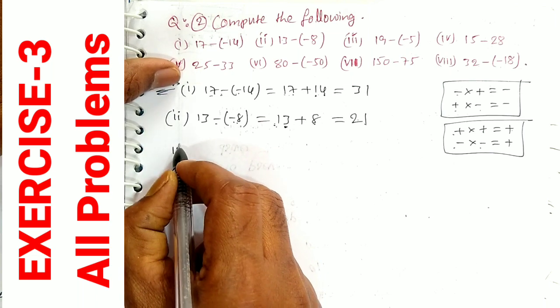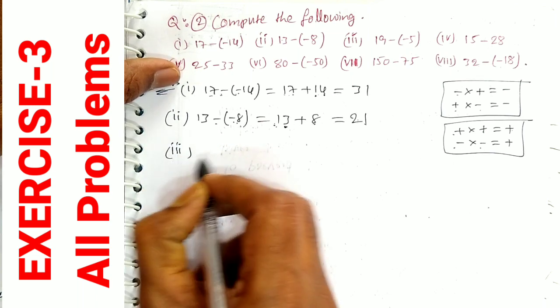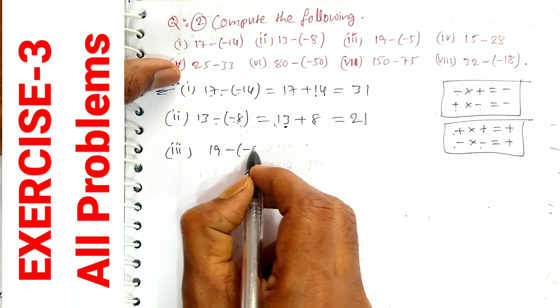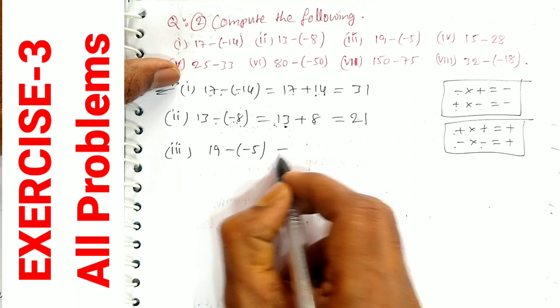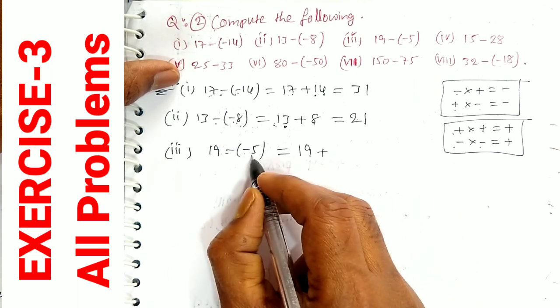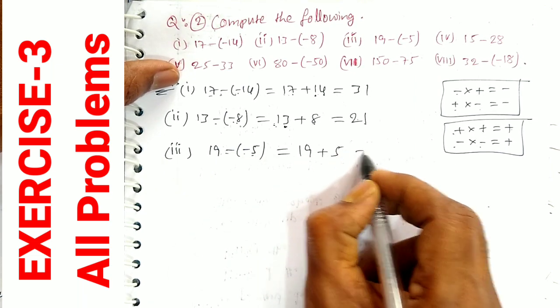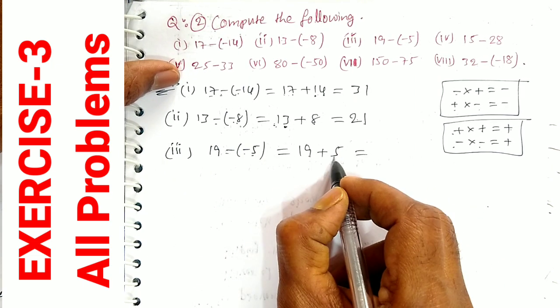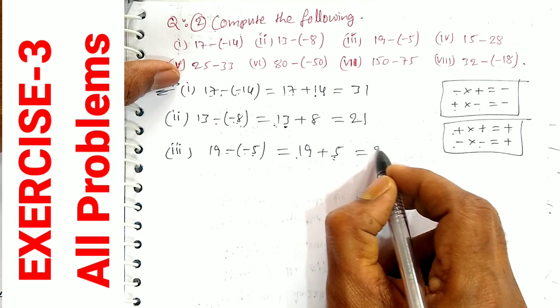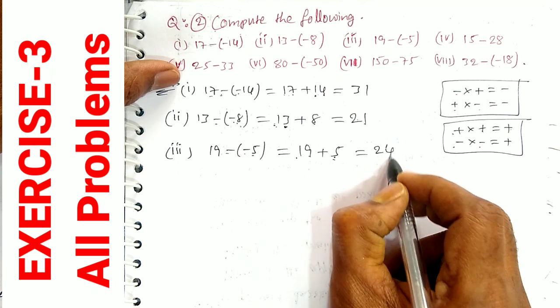Third one: 19 minus (-5). Minus into minus becomes plus, so 19 plus 5. Adding: 9 plus 5 is 14, 14 plus 10 is 24. Therefore, 19 minus (-5) is equal to 24.